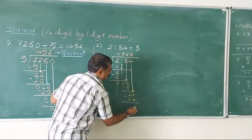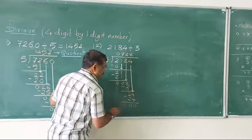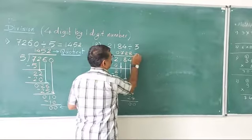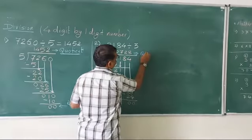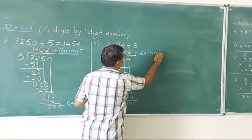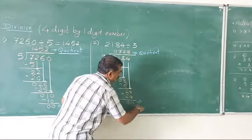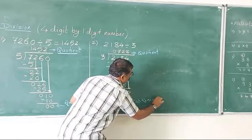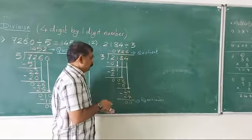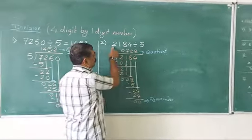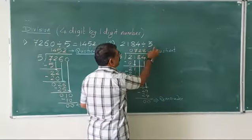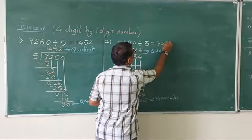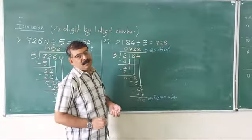Let us do the subtraction: we get remainder 0. This number is called the quotient, and here this number is known as remainder 0. So for the answer, 2184 divided by 3, we get the answer 728. Thank you for watching.